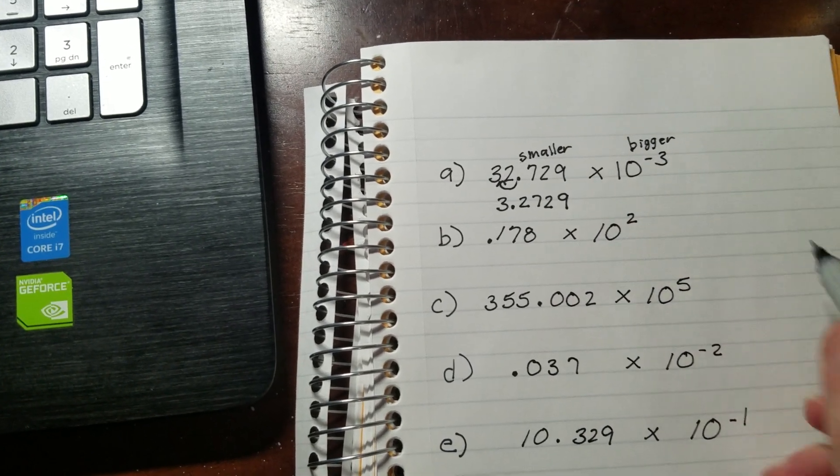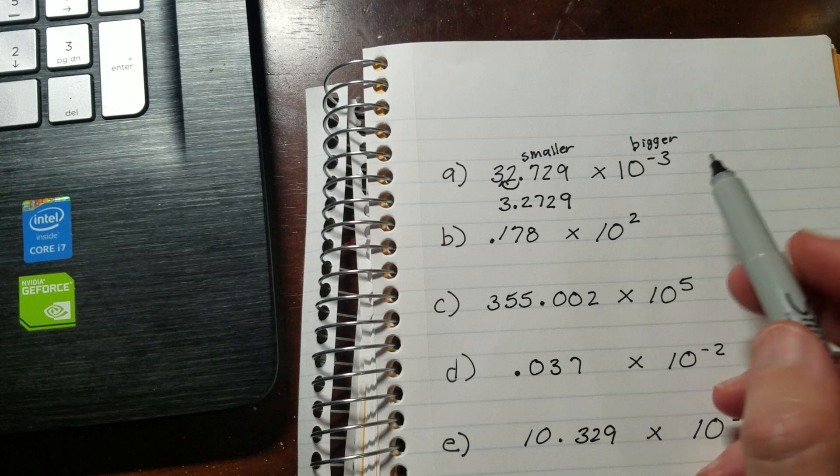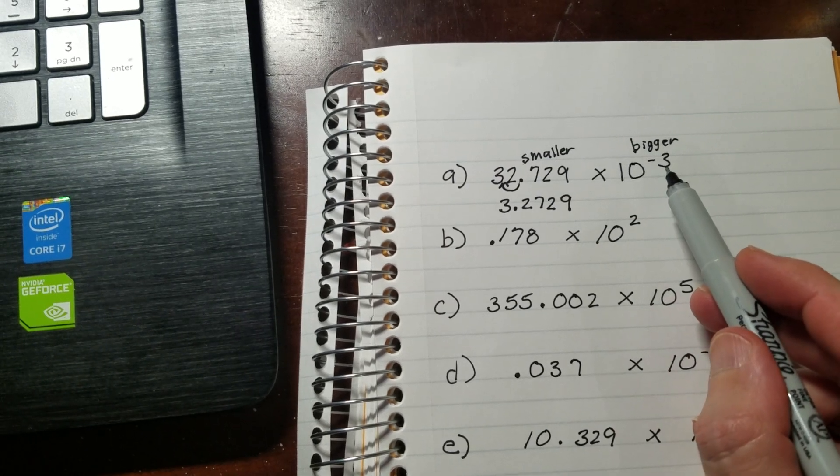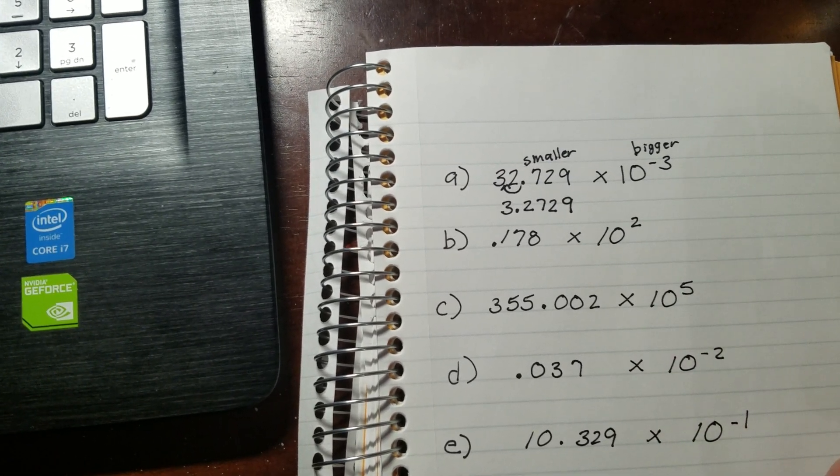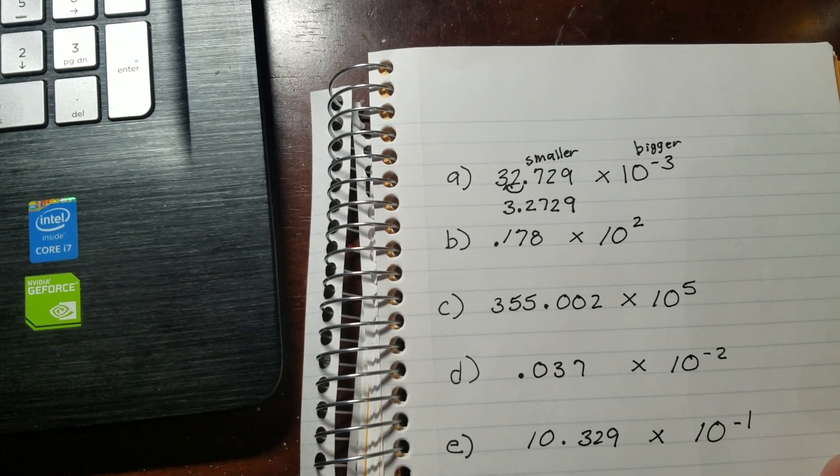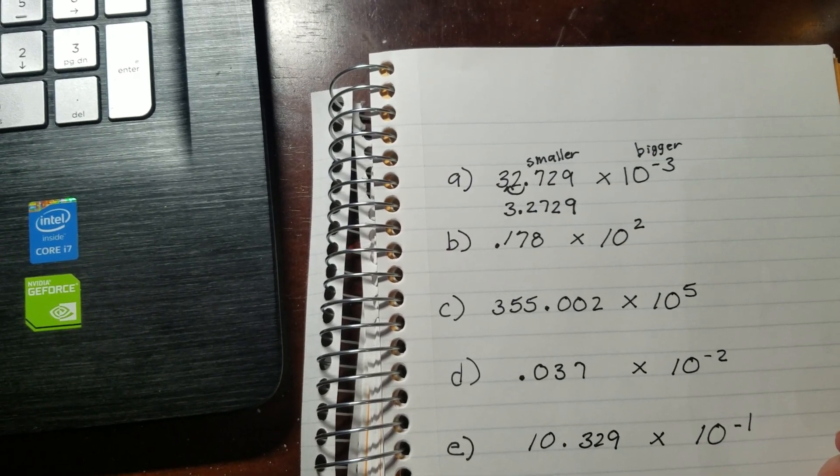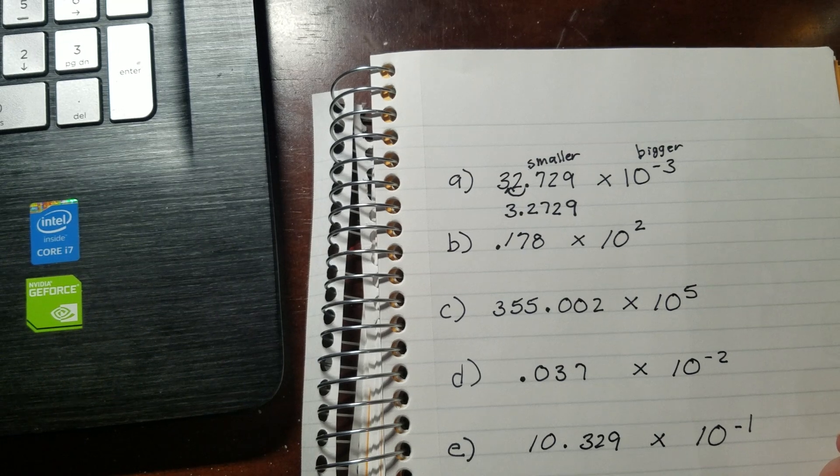Now when it comes to negative exponents, you have to be kind of careful because a lot of times people go, oh, you know what, 4 is bigger than 3, and they'll write down negative 4. But remember, with negatives, everything's running the opposite direction. So if you made this negative 4, you'd actually be making it smaller.